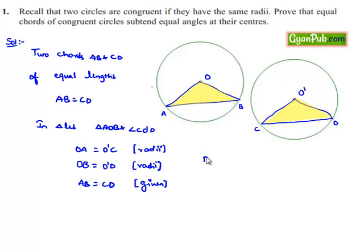Now by the SSS property of congruency, we can say both the triangles are congruent, that is triangle AOB is congruent to triangle CO'D.